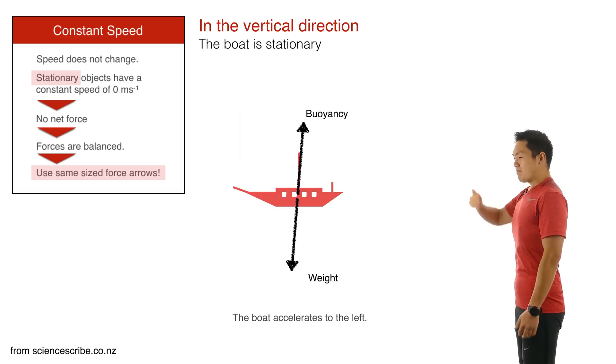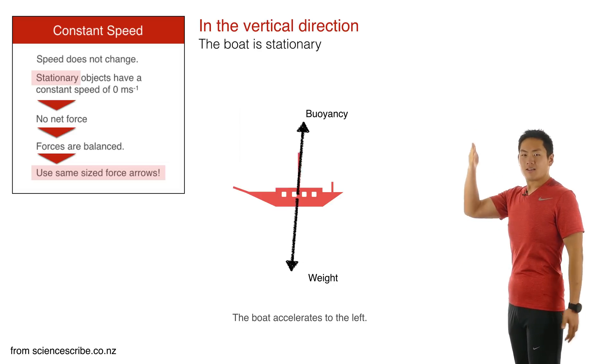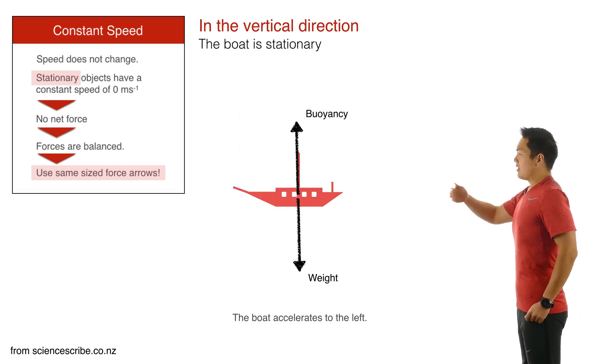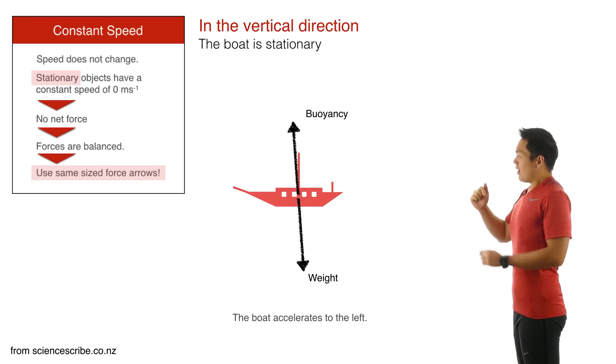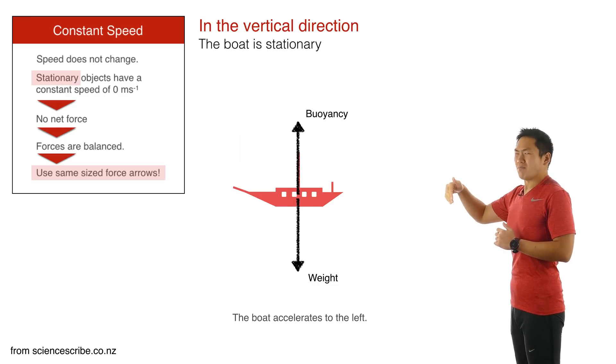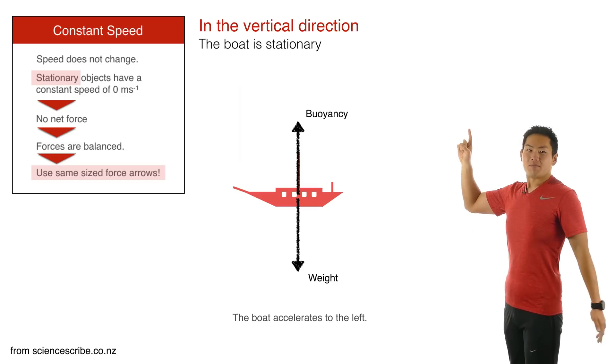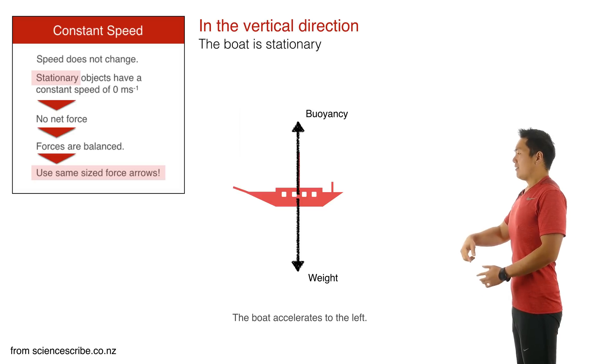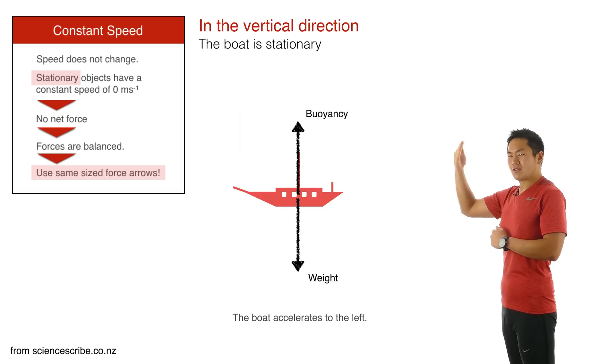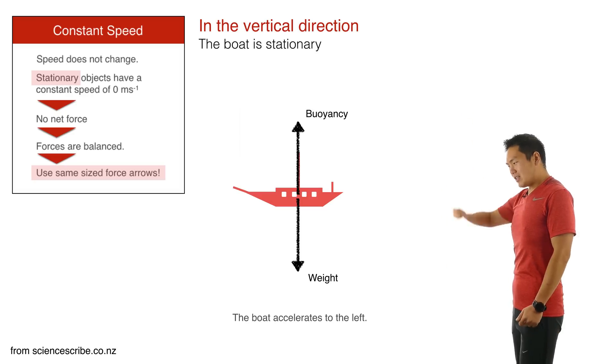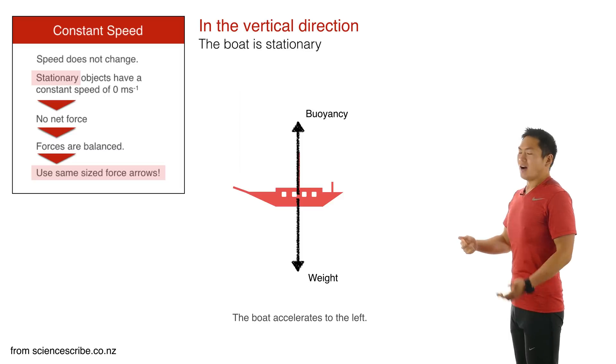Now, I come back to the same idea as before, where I consider the vertical and the horizontal. So thinking about the vertical, I can see that the weight of the boat doesn't suddenly change. So I need to use the same sized arrow going down. It's not a boat that's flying up into the air or sinking straight down. So it's stationary in the vertical direction. So stationary in the vertical direction, I come back to my table. It's got no net forces. The forces are balanced.